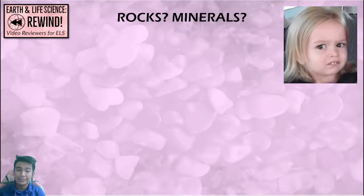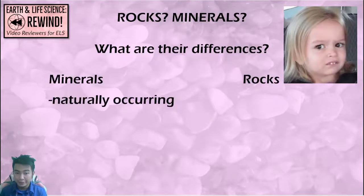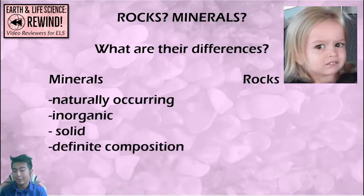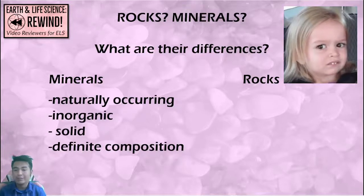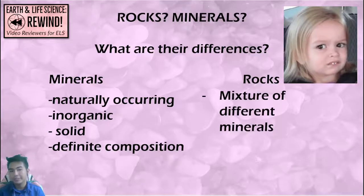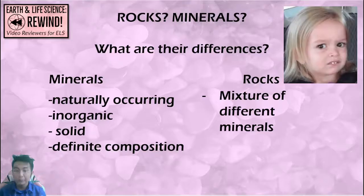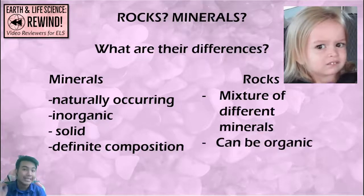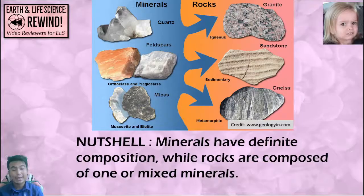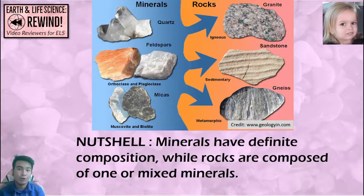But how are minerals different from rocks? Minerals are naturally occurring, inorganic, solid, and have a definite composition. Rocks differ in that they can be a mixture of different minerals. While minerals have a definite and pure composition, rocks can be organic and can be mixed — composed of one or more minerals and can also be related to living organisms.